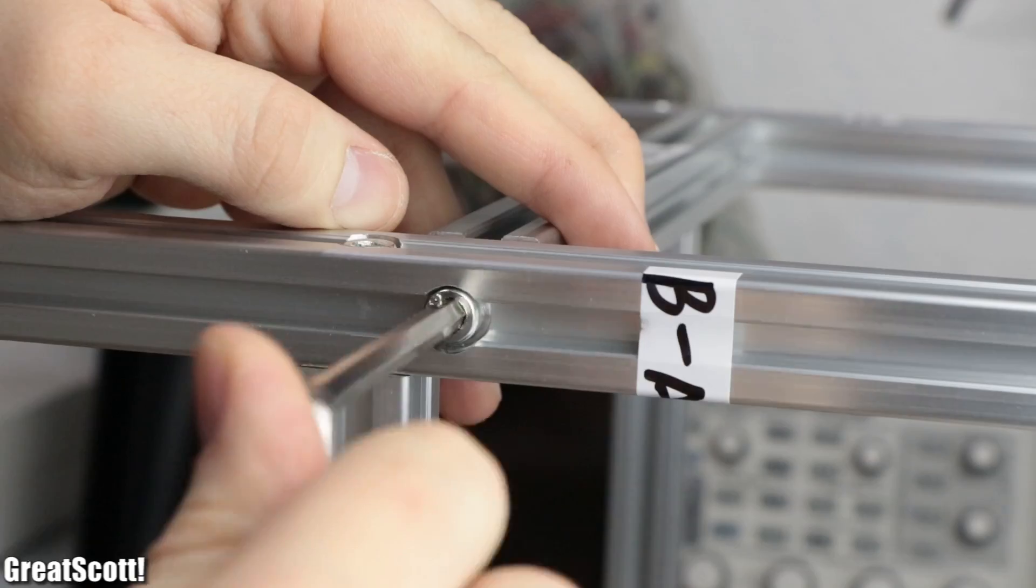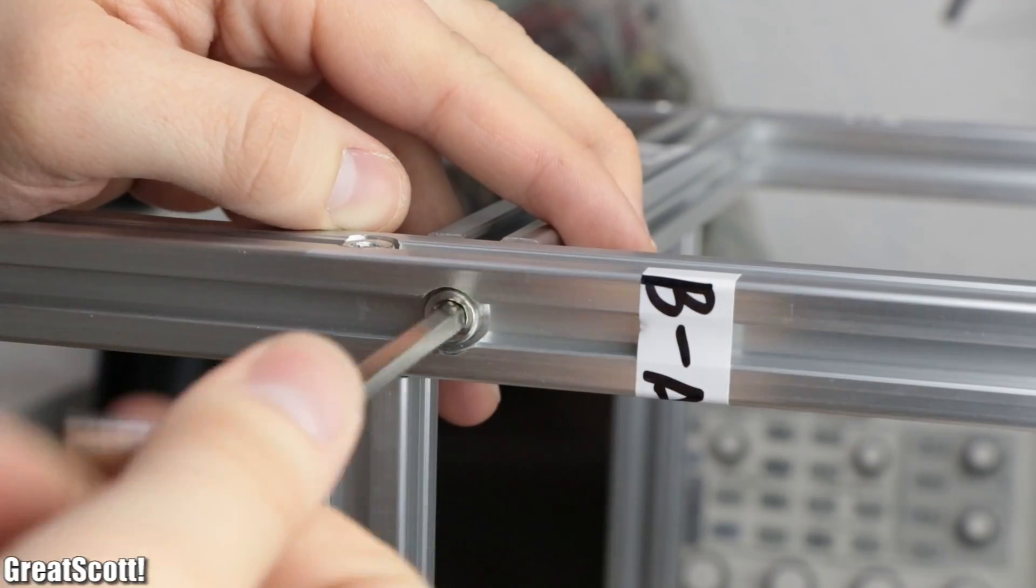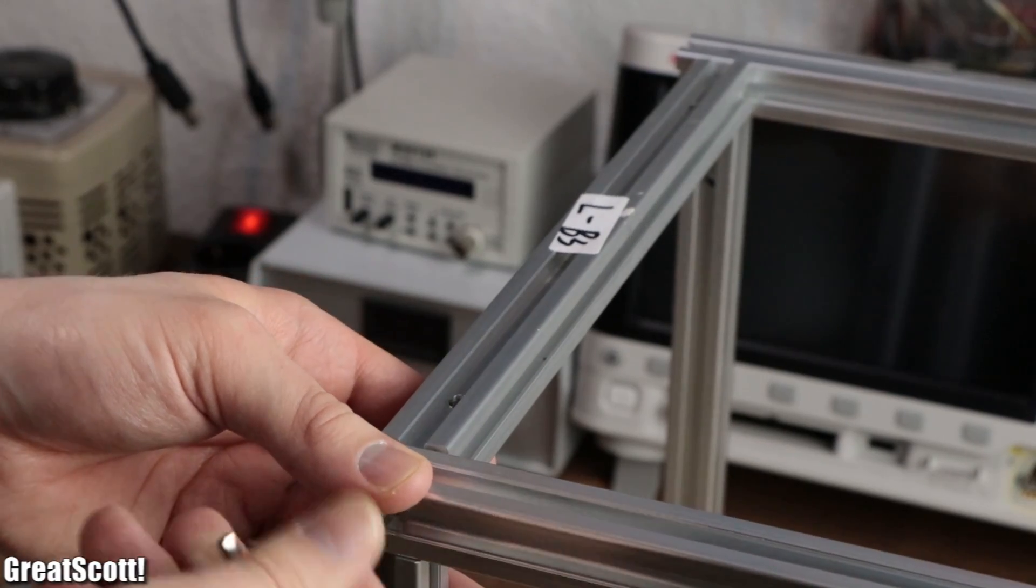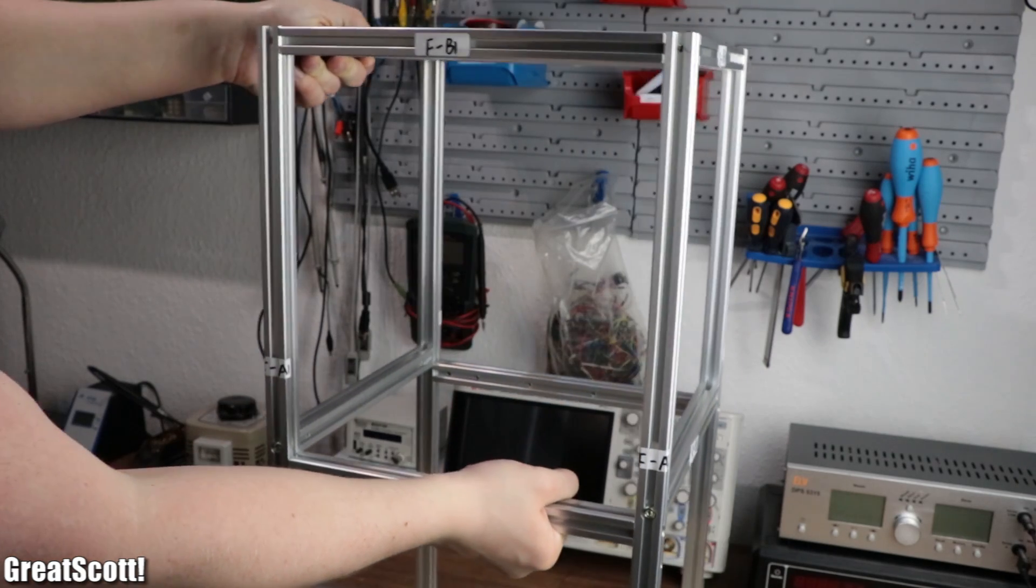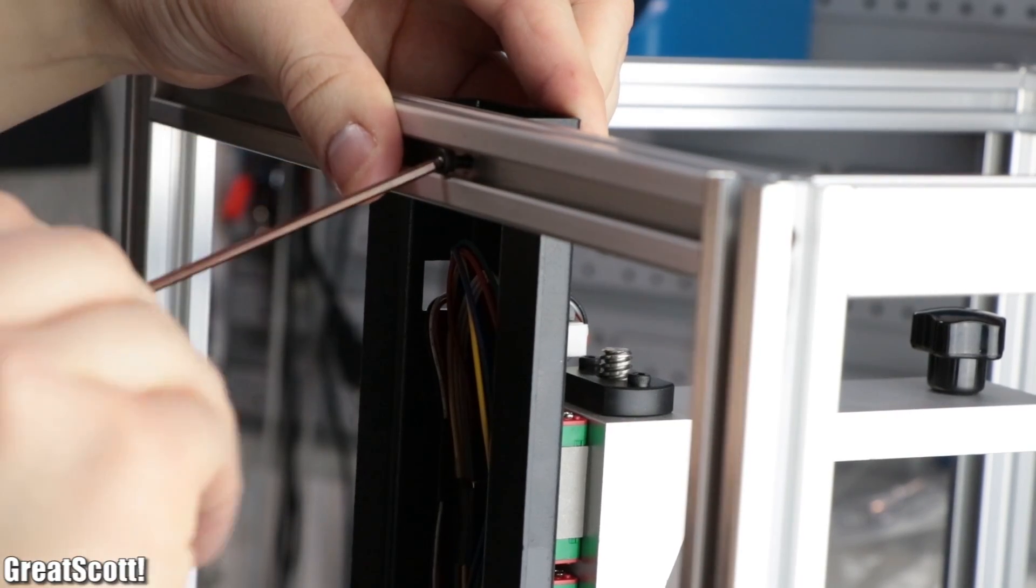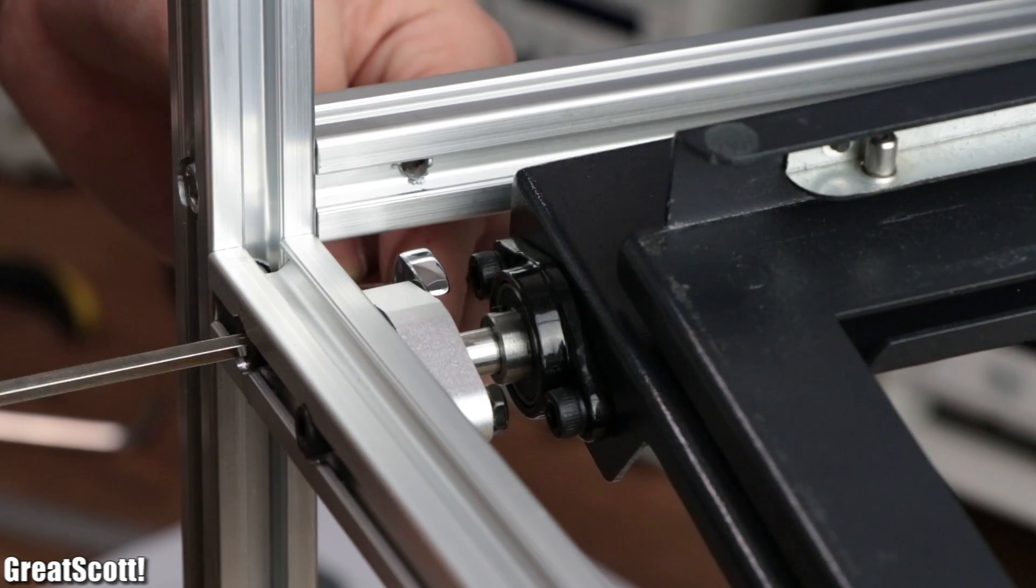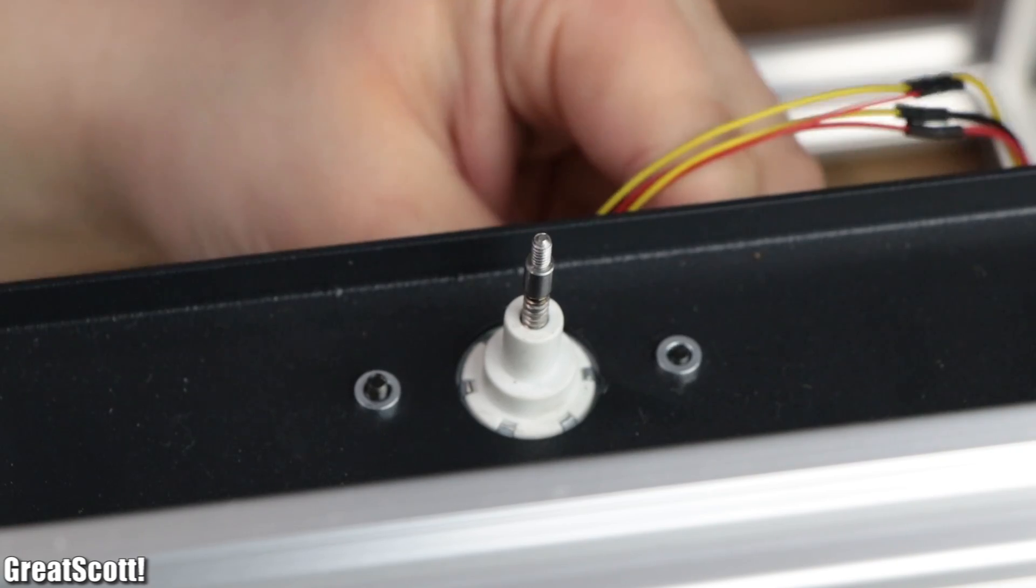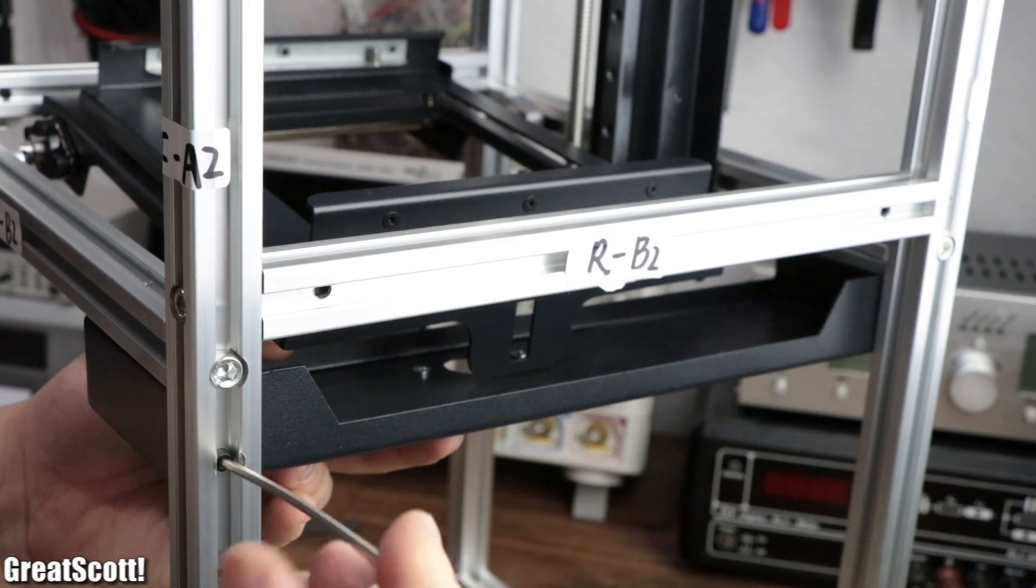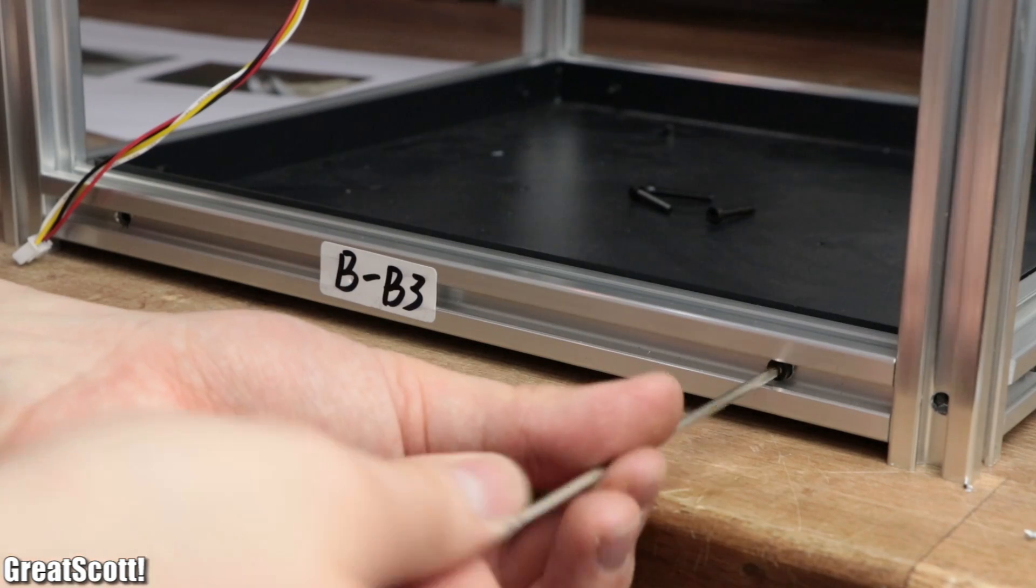I started the building process by connecting the eight pieces of maker slides to create the main cuboid structure of the printer. Afterwards, I secured the Z-axis with stepper motor to the back of the structure, mounted the metal piece for holding the resin vats along with an additional lifting motor in the middle of the cuboid, and attached the bottom plate.